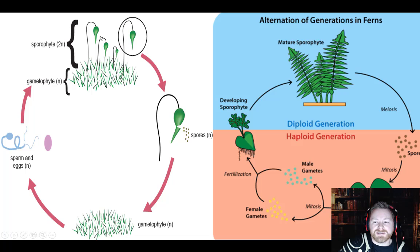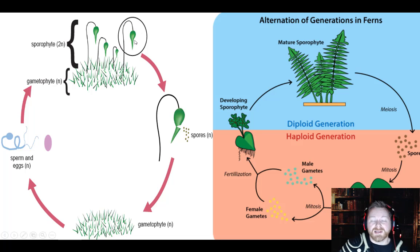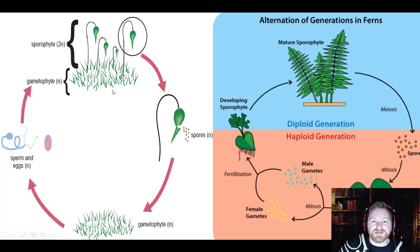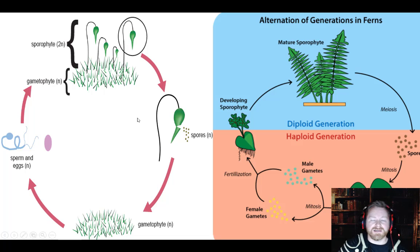Usually the sporophyte starts off green, but as it dries out it hardens and turns brown. This little capsule will crack open and out come spores, because the sporophyte produces spores. Those spores go back into the gametophyte — this is the dominant gametophyte, non-dominant sporophyte that we see in non-vascular plants.